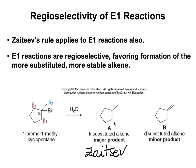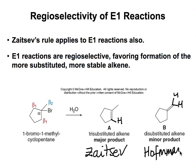The more substituted alkene — here it has only one H, meaning it is trisubstituted — is the major Zaitsev product. The less substituted alkene has two H's, meaning it is disubstituted, making it the minor product, which is called the Hoffman product, also known as the anti-Zaitsev product.